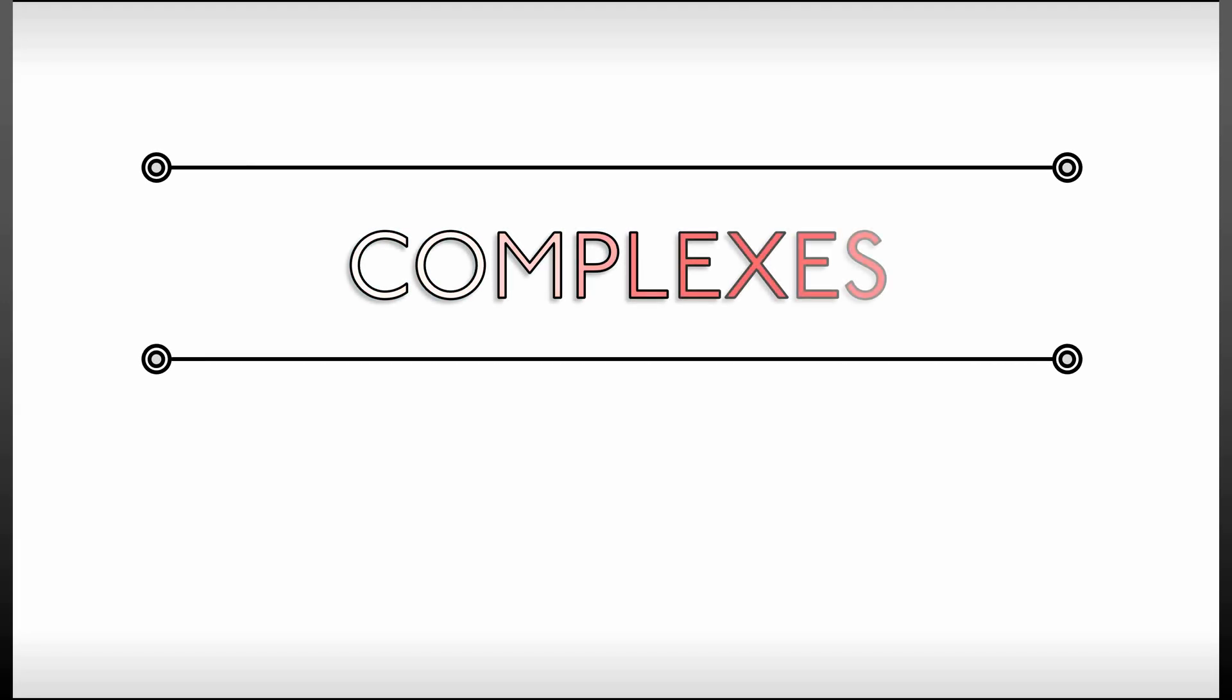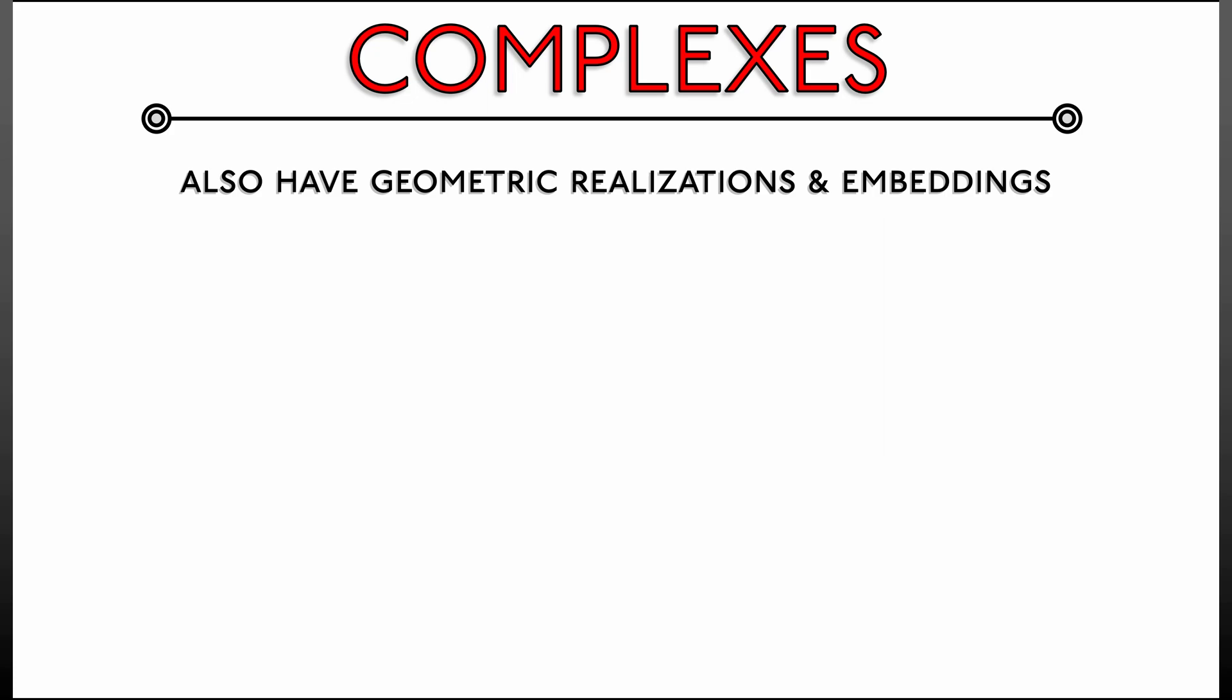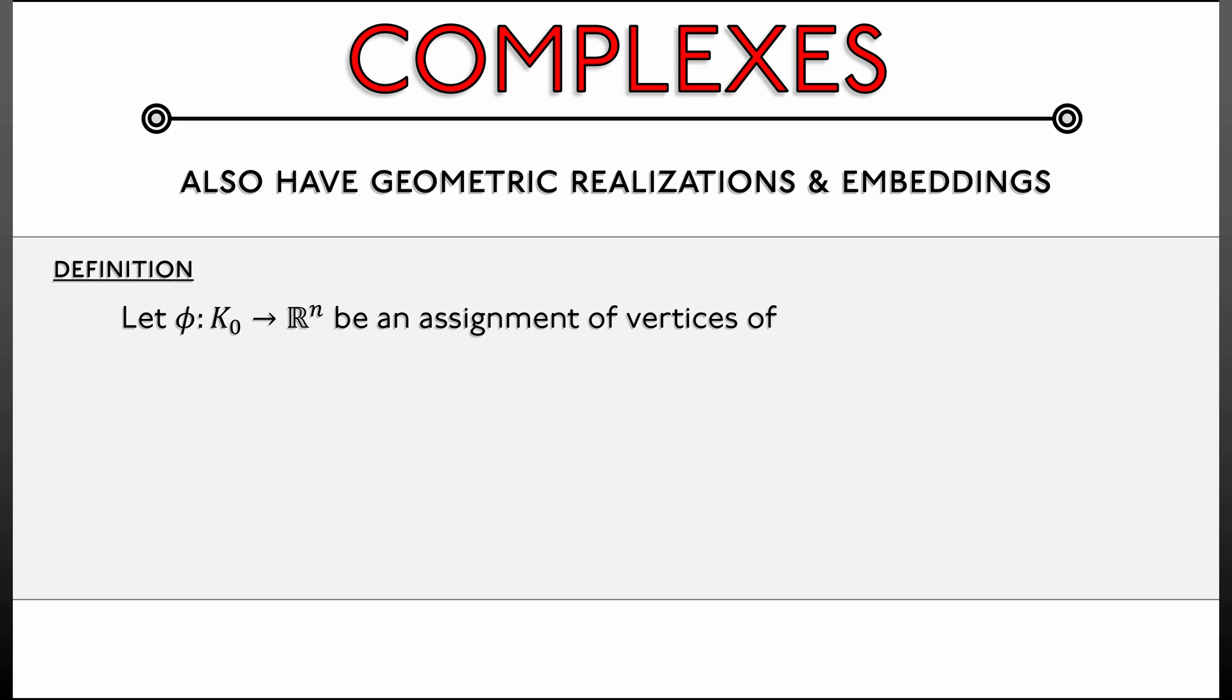Complexes also have geometric realizations and embeddings. Let's dig into what that means. Here's a more technical definition. We're going to let φ be an assignment of the vertices of a simplicial complex K to points in a Euclidean space Rⁿ. That is φ goes from K₀, the vertex set or the zero skeleton of K, into Rⁿ.